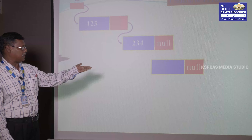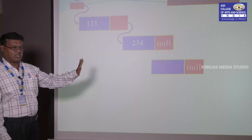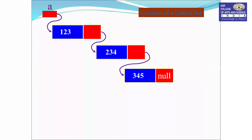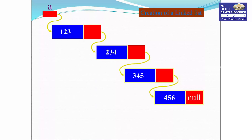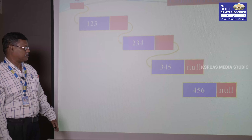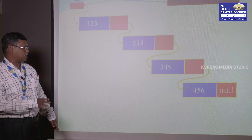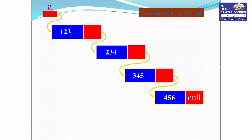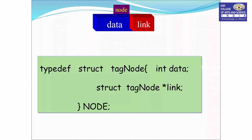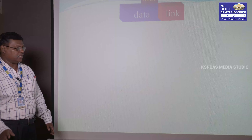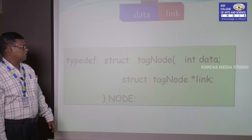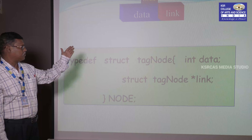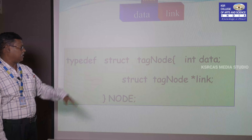We then add a third node storing data item 345, so 234 points to this node. Next, we add data 456, and node 345 points to the new node. In this way, we insert data items into the single linked list. The node structure has two parts: data and link part.